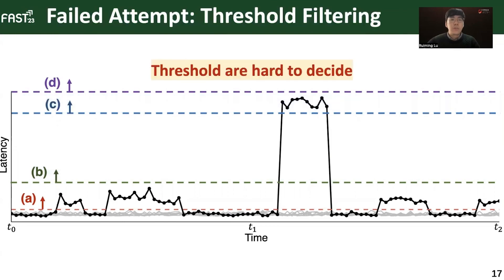However, setting up these thresholds is empirical and inaccurate in practice. And thus, we are trapped in a dilemma. On one hand, setting a relaxed threshold like the red one can easily mislabel normal performance variations as fail-slow false positives. On the other hand, a strict one like the purple or the blue one could leave many fail-slow cases undiscovered.